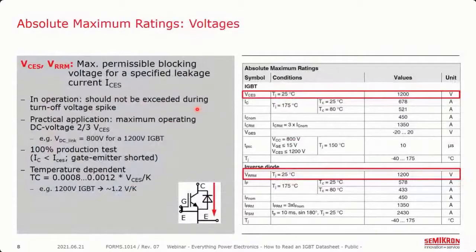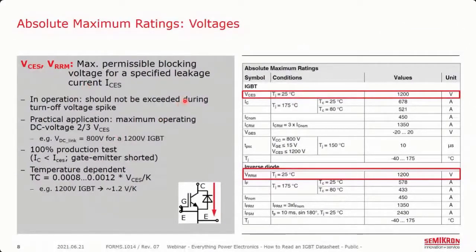Starting with maximum ratings and voltage, the first item at the top of the data sheet is the blocking voltage of the semiconductor — VCES for the IGBT and VRRM for the diode. This is a standard value across most power module manufacturers and serves as a way of broadly categorizing power modules, so we'll be talking about 600-volt, 1200-volt, or 1700-volt modules. This is defined as the maximum voltage the device can block in its off state or reverse state without exceeding a given leakage current, ICES, which is stated later in the characteristics section — for this IGBT, it's 5 milliamps.